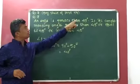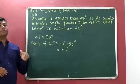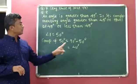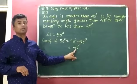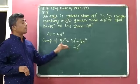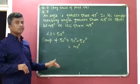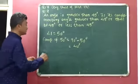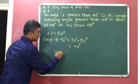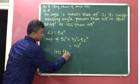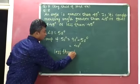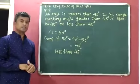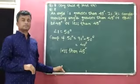So if an angle is greater than 45 degrees and we identify its complementary angle, then it is always less than 45 degrees. Our final answer is: the complementary angle is less than 45 degrees. I hope you understand this. Thank you.